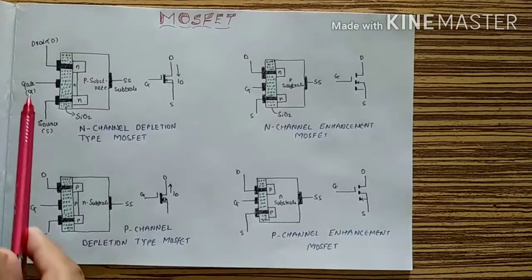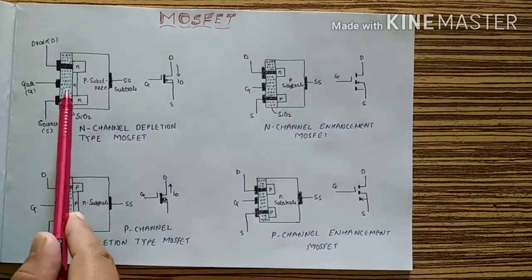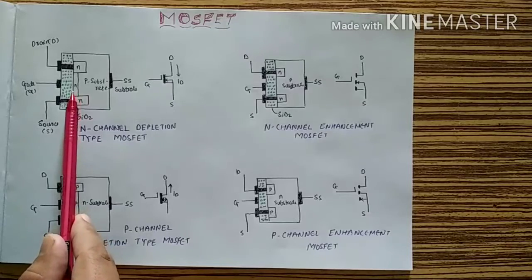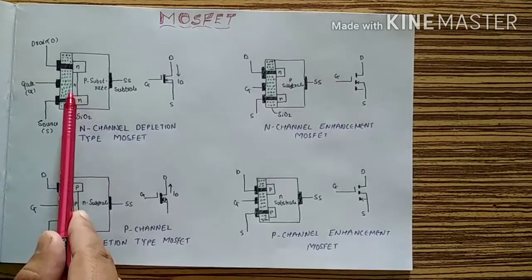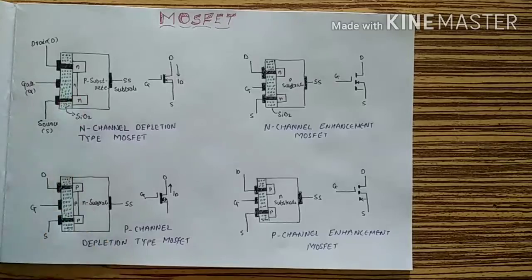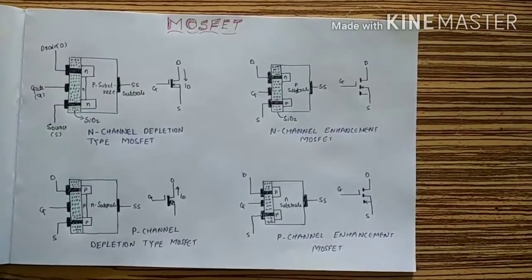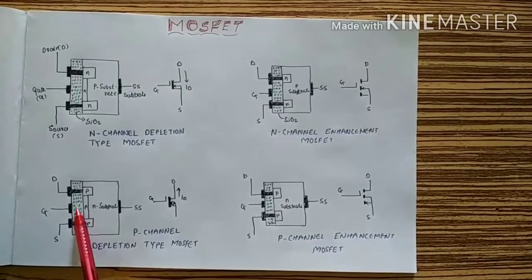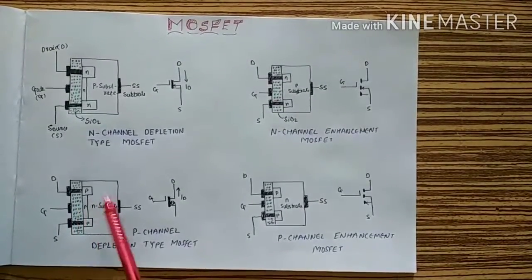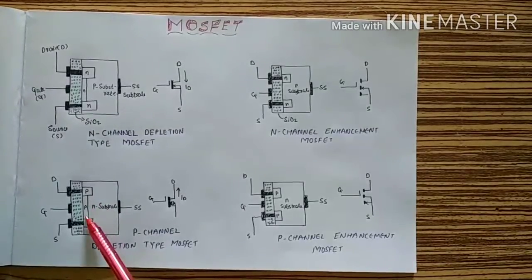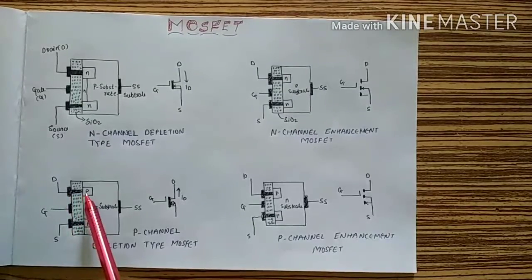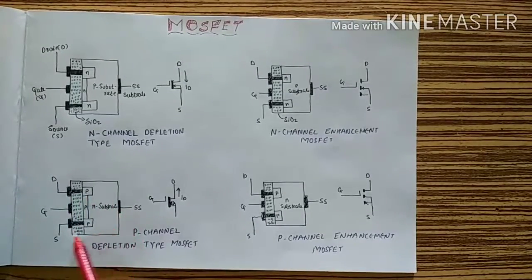For the gate, there is an insulation between the N-type and the gate. Same for P-channel — there is insulation between the gate and P-type, the P-type is connected to P metallic contact, and here the substrate is internally connected with source.